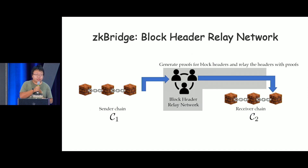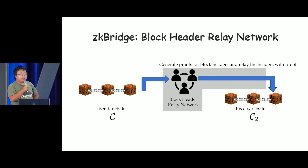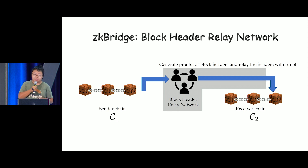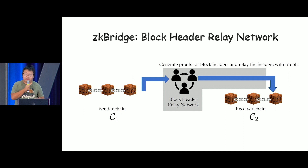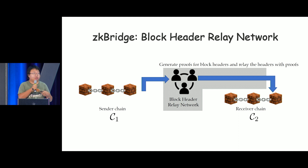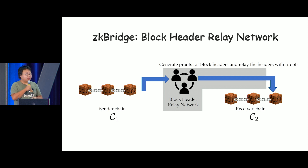Here is the main part of ZK Bridge — it's called block header relay. In the block header relay network, we have three entities: the sender chain, the receiver chain, and the block header relay. The block header relay monitors the sender chain and generates a valid proof for the sender chain's block header. The receiver chain looks at this valid proof, and if it passes, it confirms that the block header belongs to the sender chain.